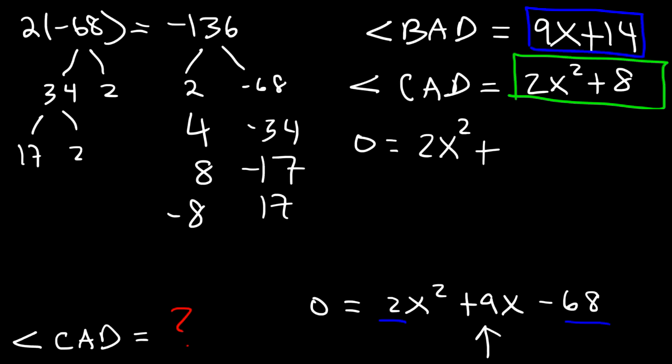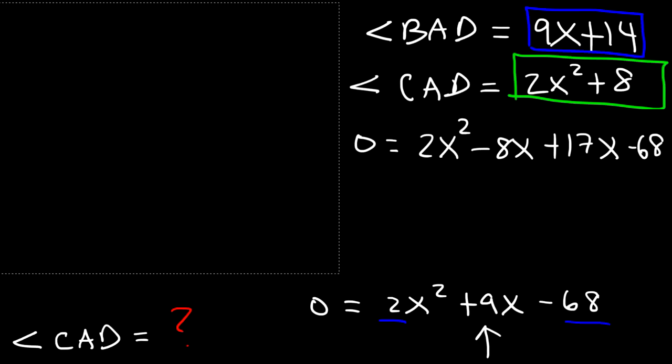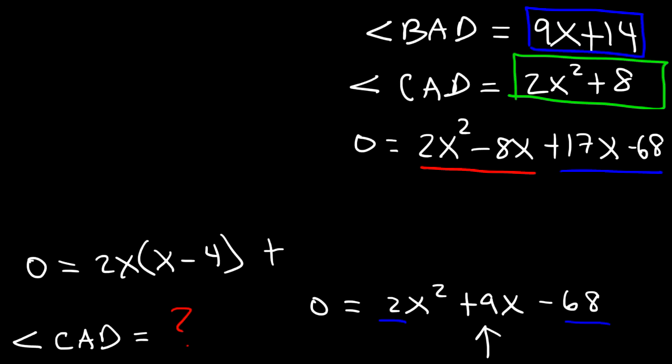So what I'm going to do is rewrite the expression and replace 9x with negative 8x plus 17x. I've chosen to put the 17 on the right side because 17 goes into 68 and 2 goes into 8. Now, the next step is to factor by grouping. So in the first two terms, let's take out the GCF. The GCF is 2x. 2x squared divided by 2x is x, and negative 8x divided by 2x is negative 4. Now, in the last two terms, we need to take out the GCF, which is going to be 17. 17x divided by 17 is x, and negative 68 divided by 17 is negative 4.